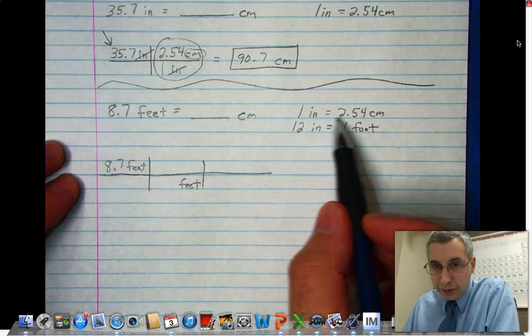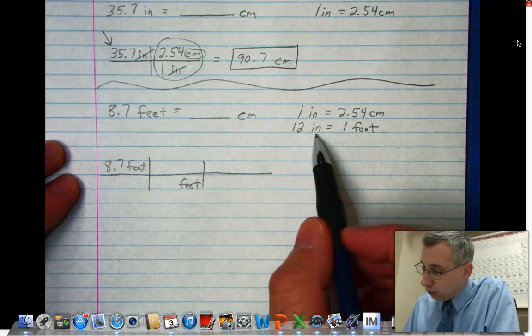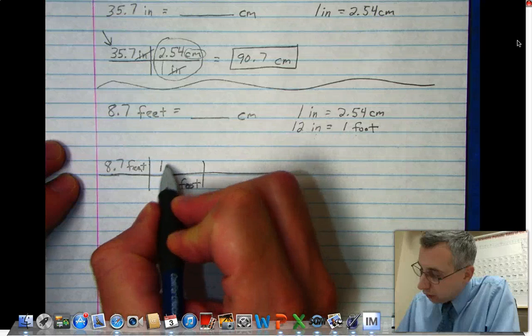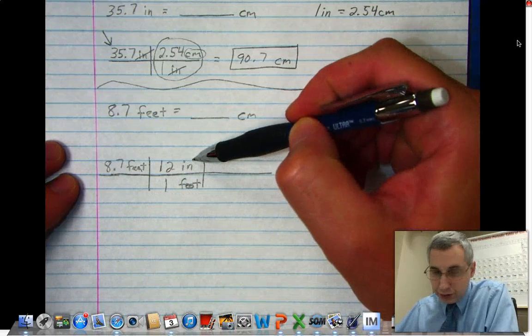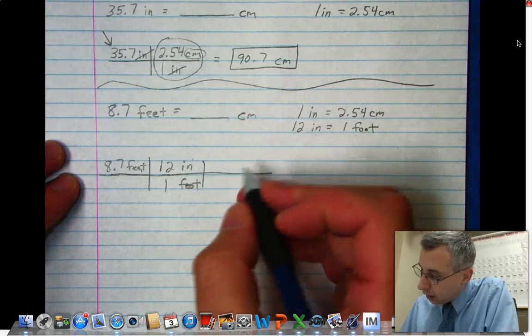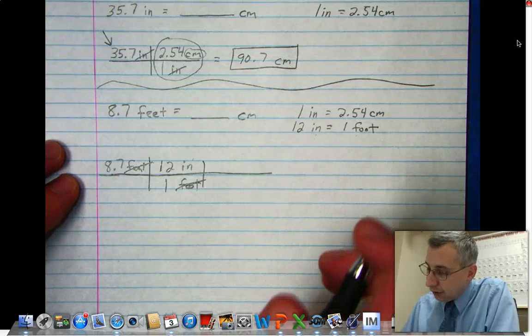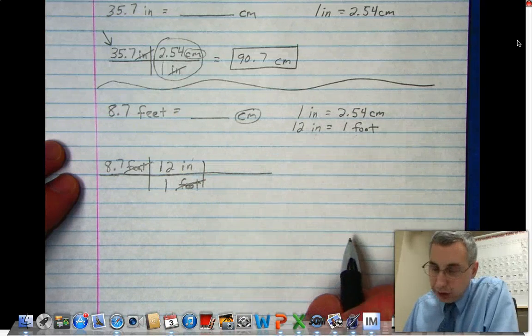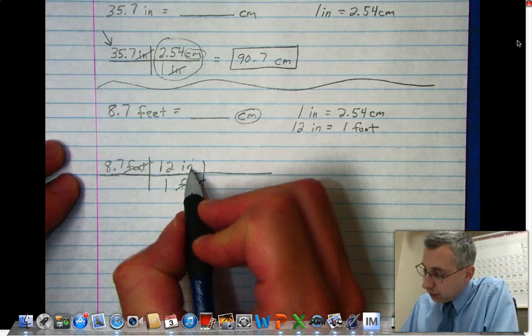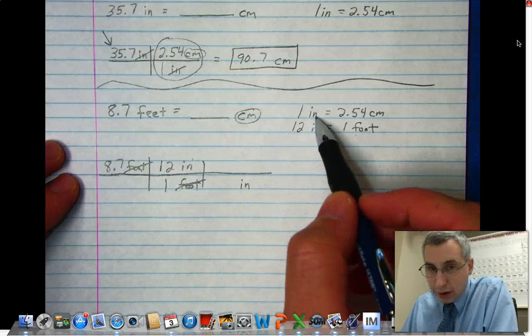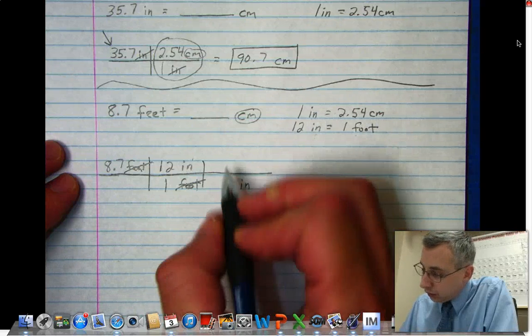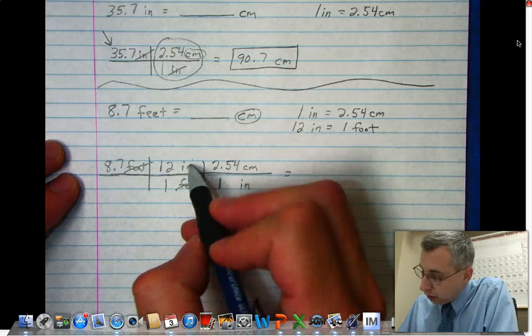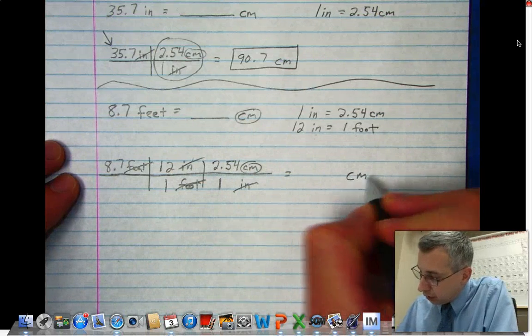Going over to my conversion factors, one foot is 12 inches. Notice how this works: what's on top, 12 inches, equals what's on the bottom, one foot. The feet cancel. I'm not done though, because I've converted from feet to inches but I want to convert all the way to centimeters, so I need another step. Since inches is up here, I need inches down here. According to my other statement, one inch is 2.54 centimeters. Notice here inches cancel and centimeters is left, which is what I wanted.